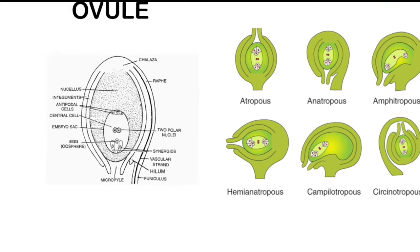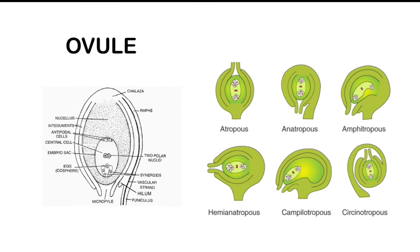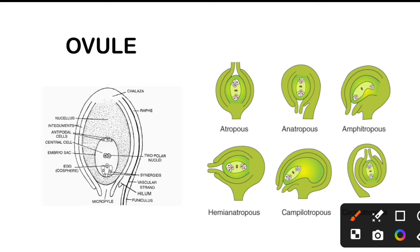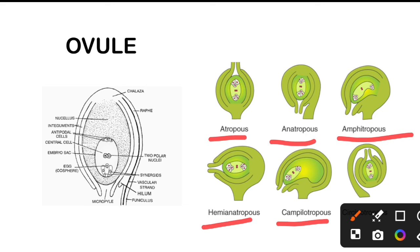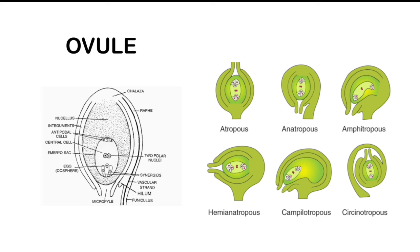The ovule structure is clear. Ovules are of different types on the basis of their direction: atropous (orthotropous) — straight; anatropous — fully inverted; amphitropous; hemianatropous; campylotropous; and circinotropous. These types should also be remembered.